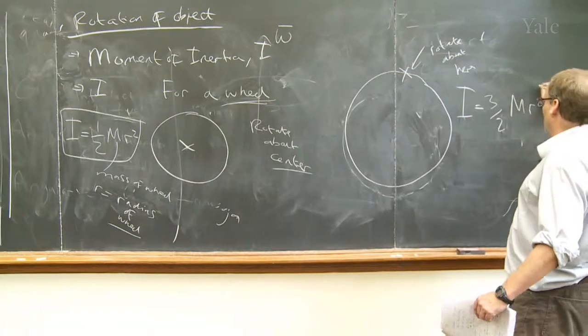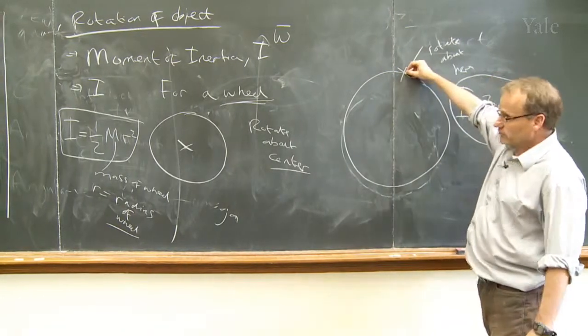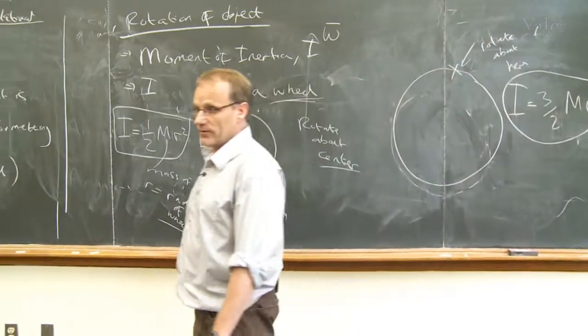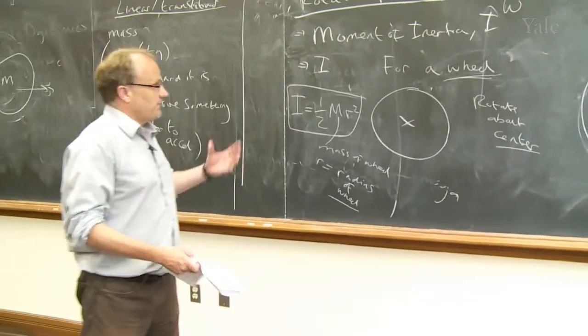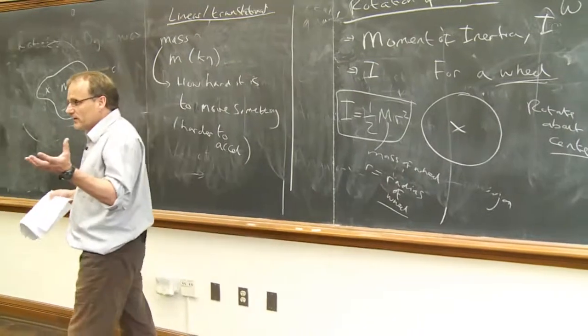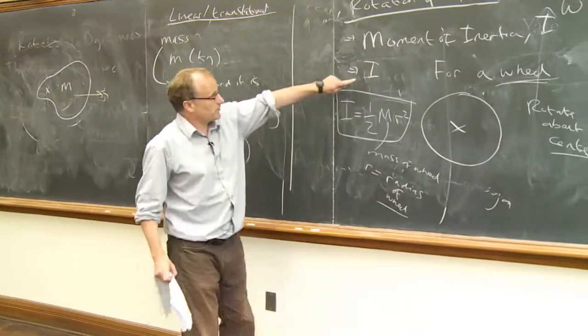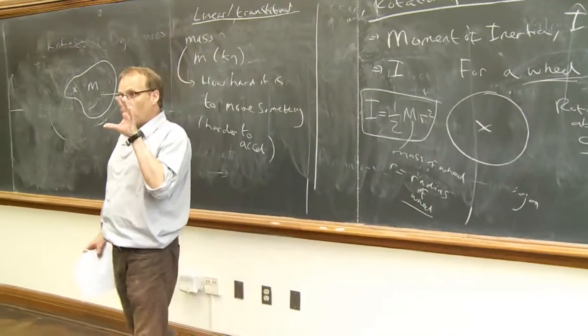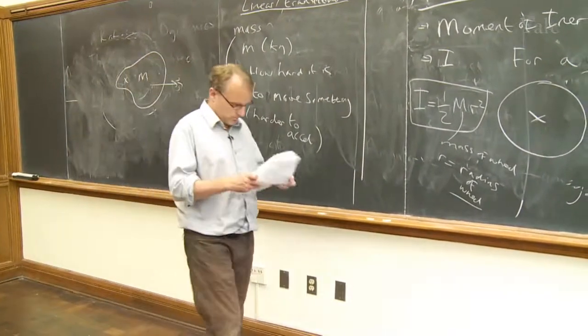Where m and r have the same meaning. So if I try to rotate it about here, it's much harder to rotate. It's much harder to get the thing to spin up, and that difficulty of how hard it is to rotate is contained in this quantity I, which will depend on the distribution. It also depends on where the rotation axis is.